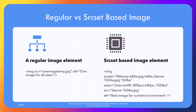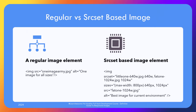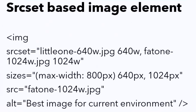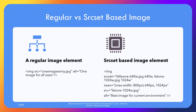Enough talk in abstracts. Let's see what the source set attribute looks like. For comparison, a standard image tag looks like this on the left. Now let's say we want to use two images: one for high-res screens and another for low to medium res screens. One called little-one-640w.jpg, which would be a 640x480 resolution image, and another fat-1024w.jpg, which would be a 1024x768 resolution image. Using these with a source set-based image is quite different and more complicated than the regular image tag.